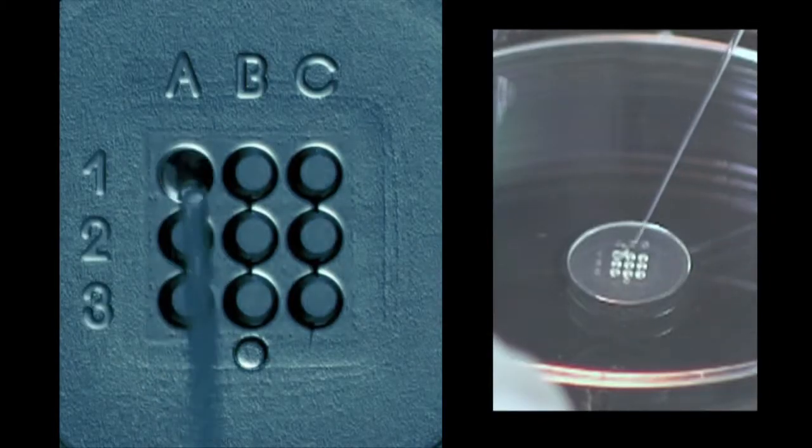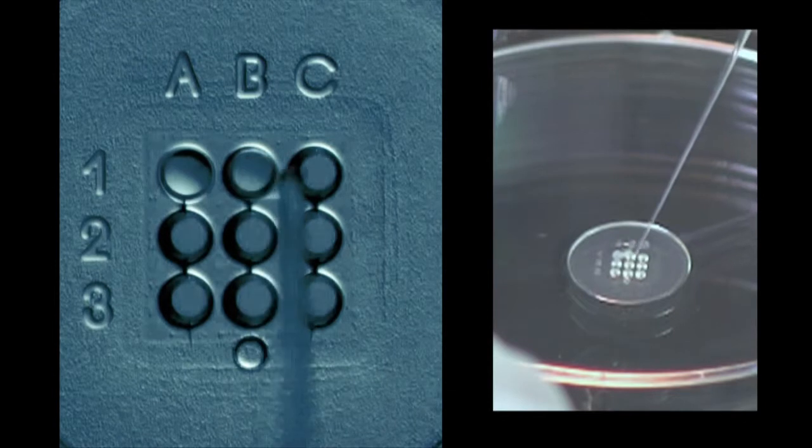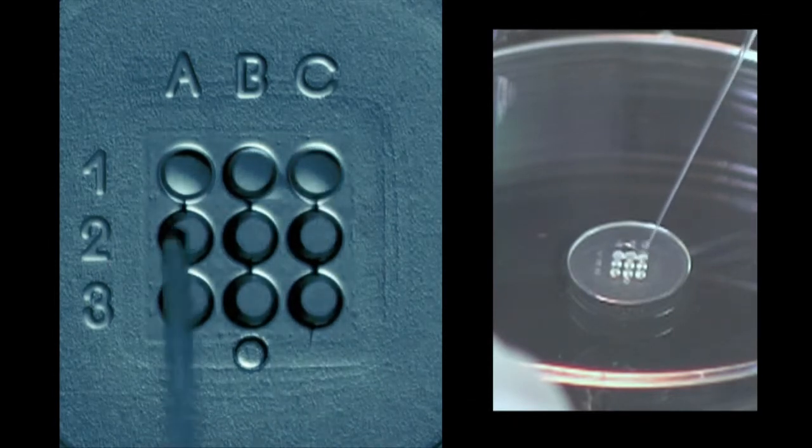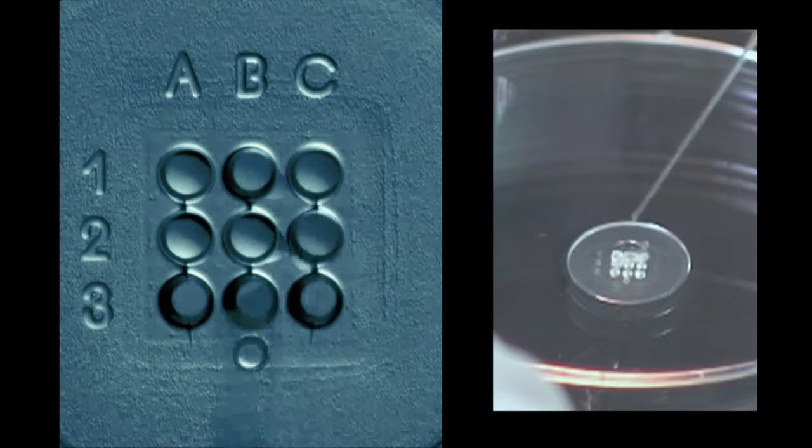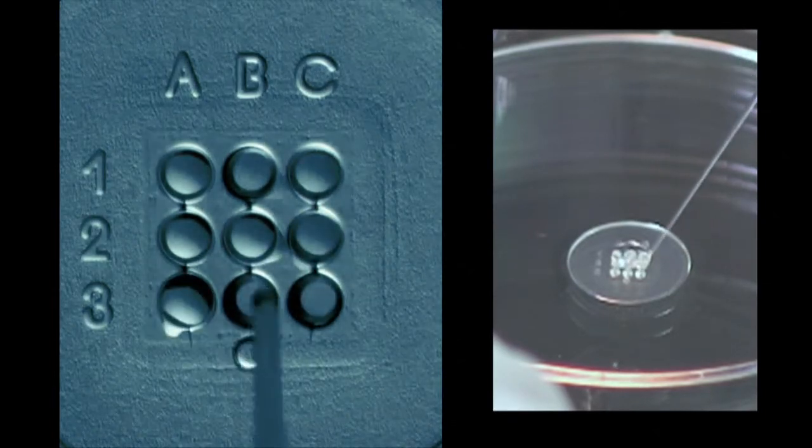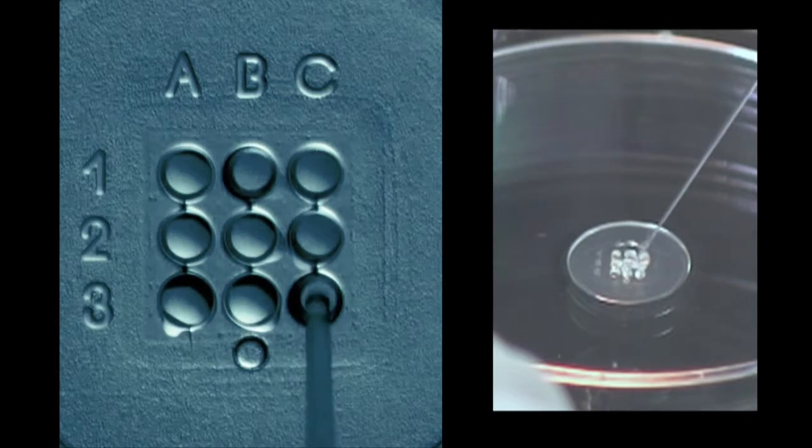To prepare your PrimoVision culture dish, load each well individually with GTL and then cover all of the wells with an additional 80 microliters of GTL. Make sure that you keep the droplet as flat as possible and avoid the formation of air bubbles.